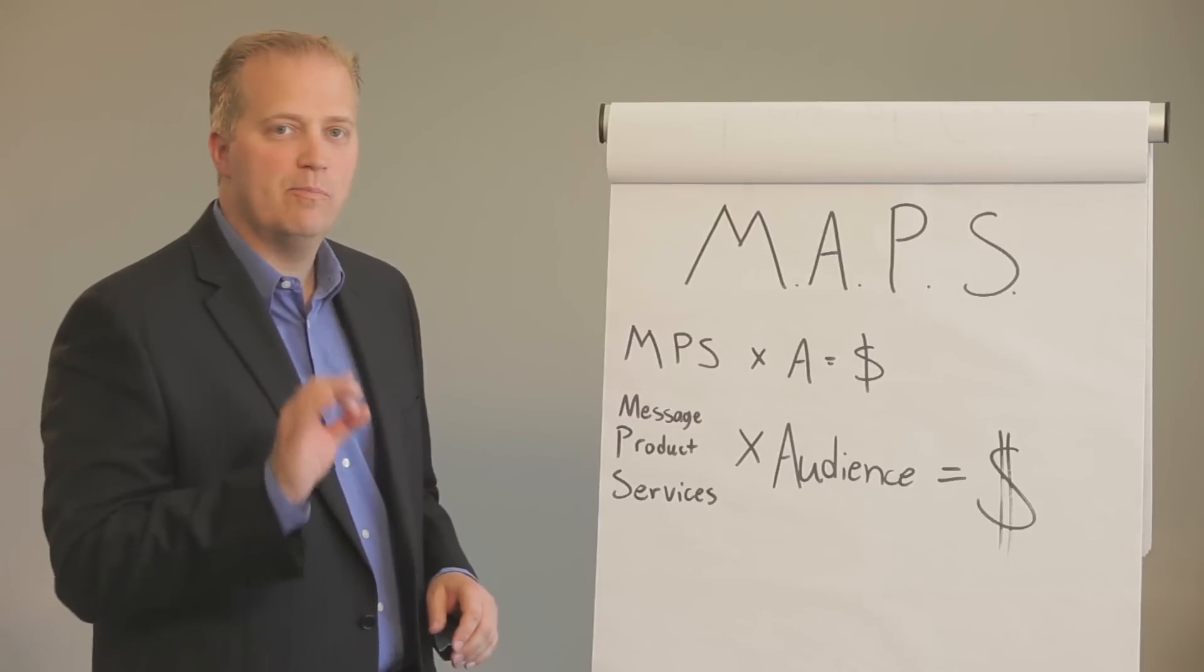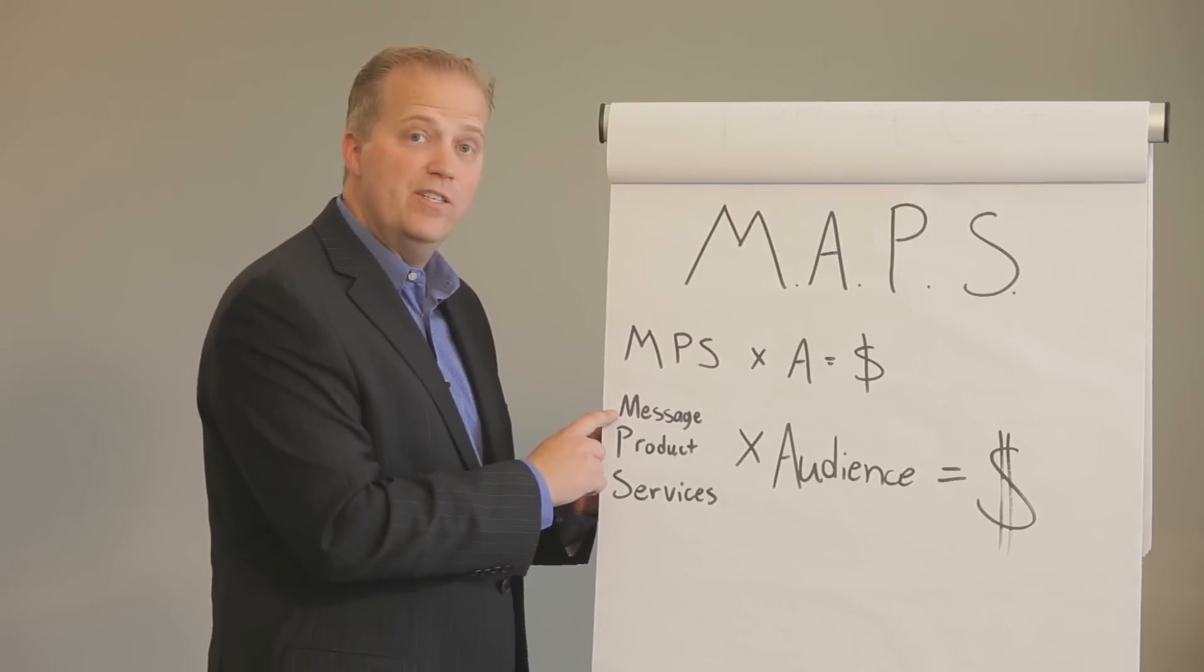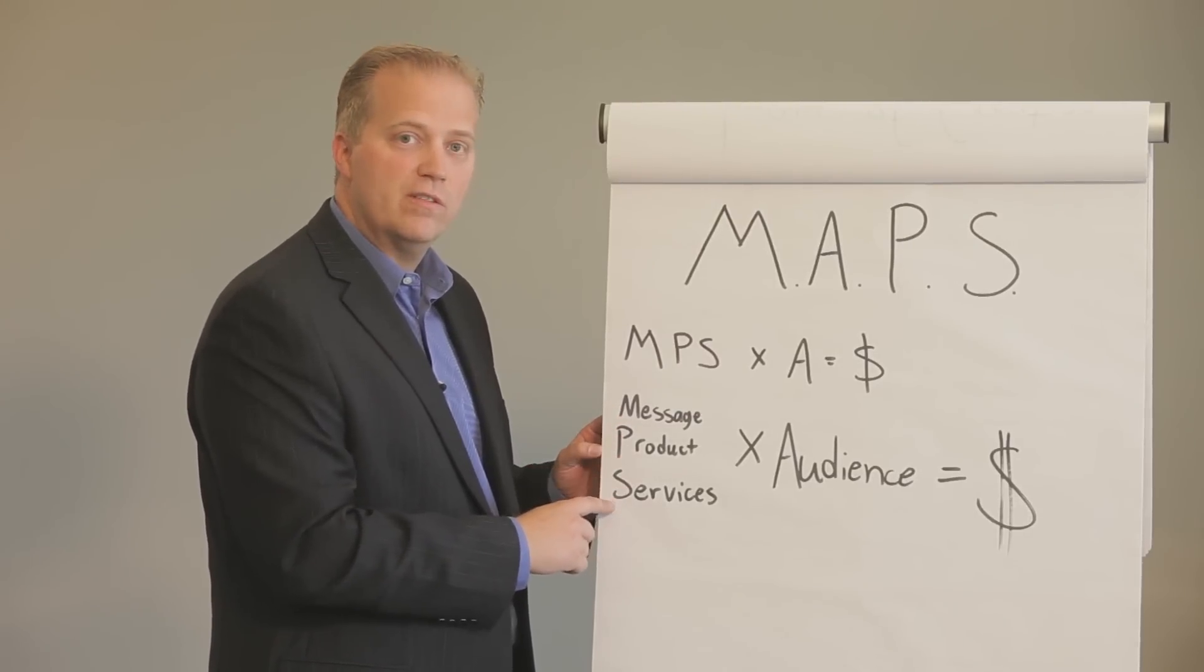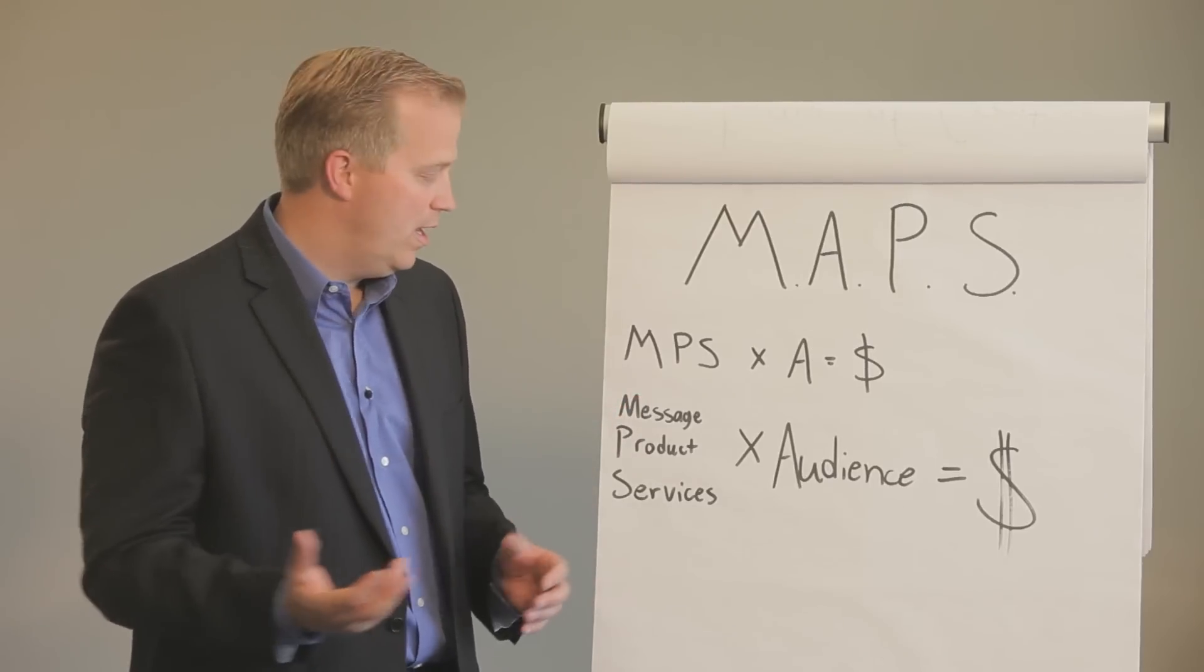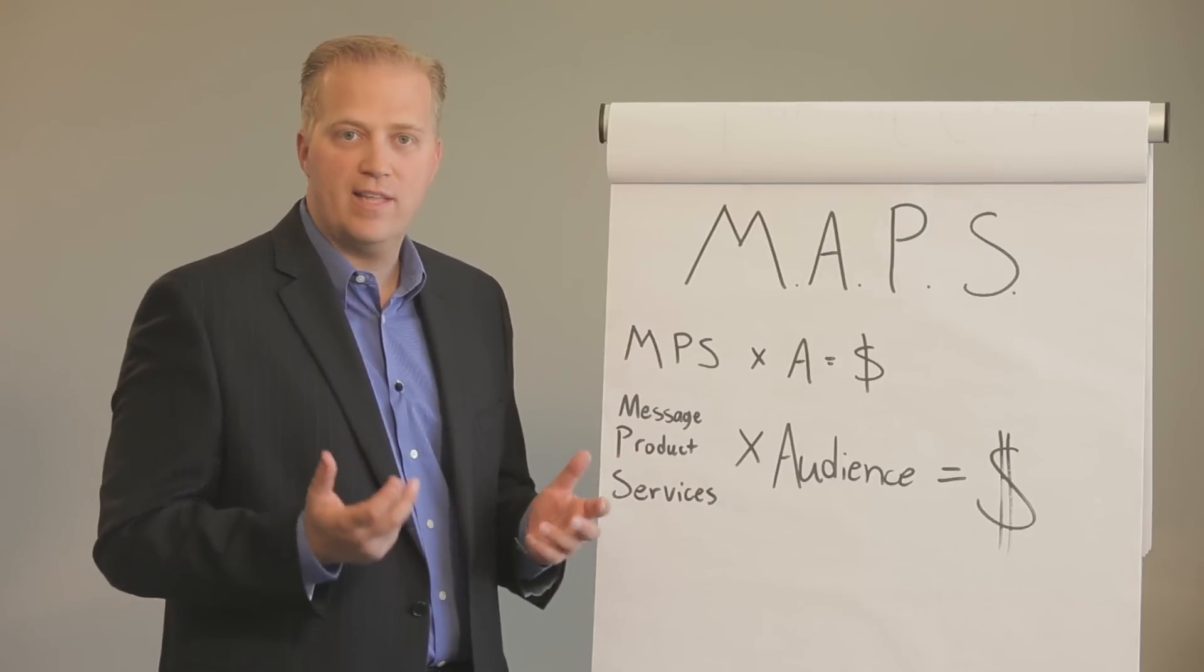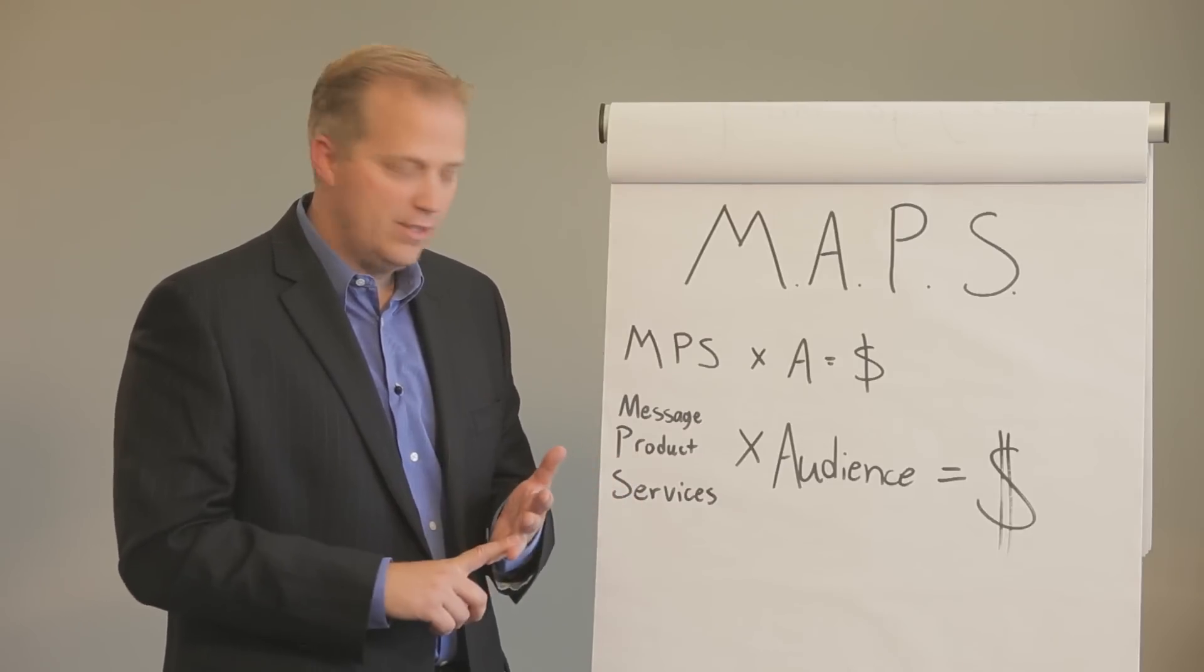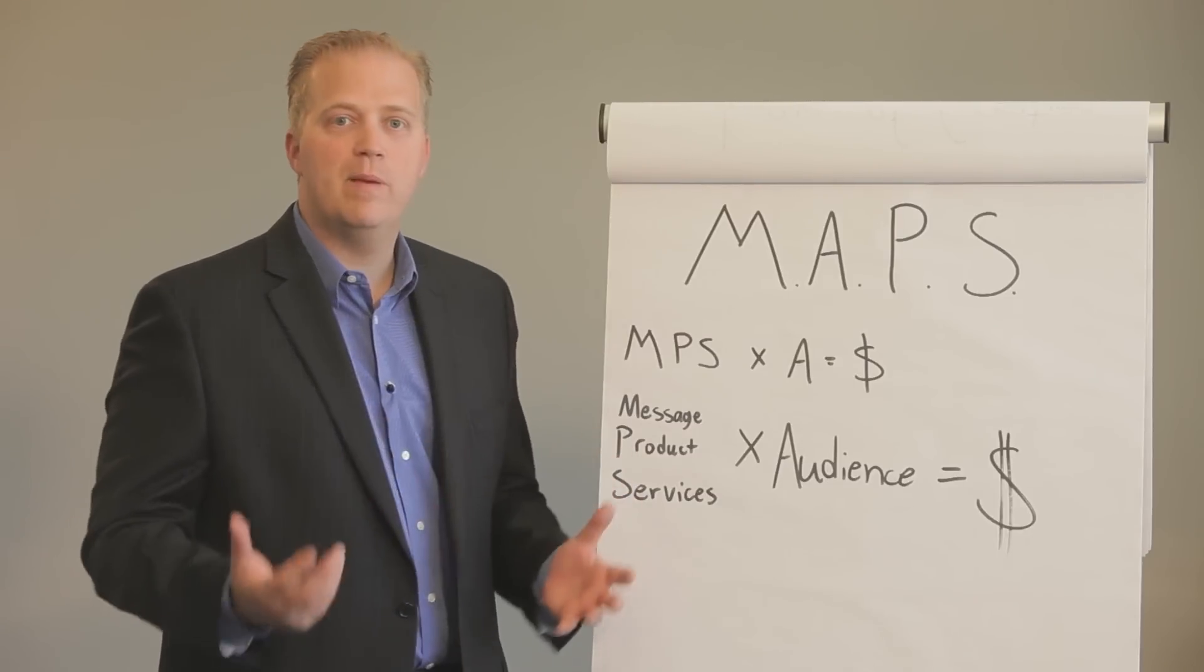I believe every business breaks down to three areas. Either you have a message, you have a product, or you have a service. For example, with emotional fingerprint the message is how do you be internal in this external world. The product are all the physical products I've developed, the movie, the card system. The services, that's the membership site.